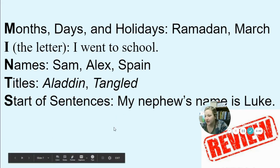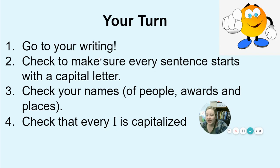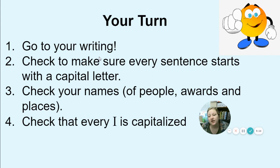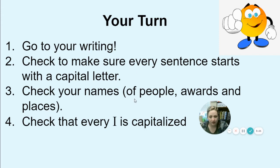It's your turn. After I read this slide, go to your order and sequence essay in your table for writing — you should have already pulled it up. Make sure you capitalize the start of every sentence. Check your names of people, awards, and places — if they were born in Brooklyn, New York, capitalize Brooklyn and New York. Capitalize the state, the city, the country. Check that every single I is capitalized when it's by itself. Go ahead and pause the video and do that now.